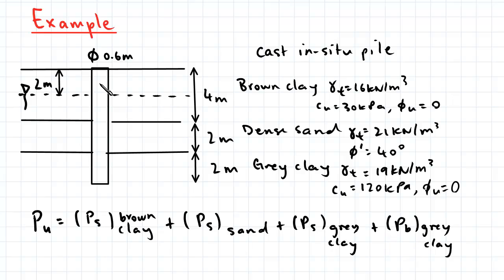If you look at the portion of the pile that is in each soil layer, in the brown clay, only the shaft of the pile is in contact with the brown clay. That's why it's PS brown clay.